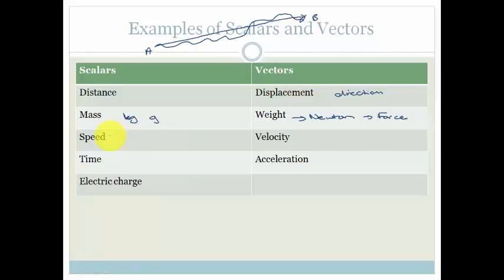Speed is just distance over time. So, distance is a scalar. Time is a scalar. So, speed equals distance over time. Whereas, velocity is equal to displacement over time. And therefore, because displacement is a vector, velocity is a vector.